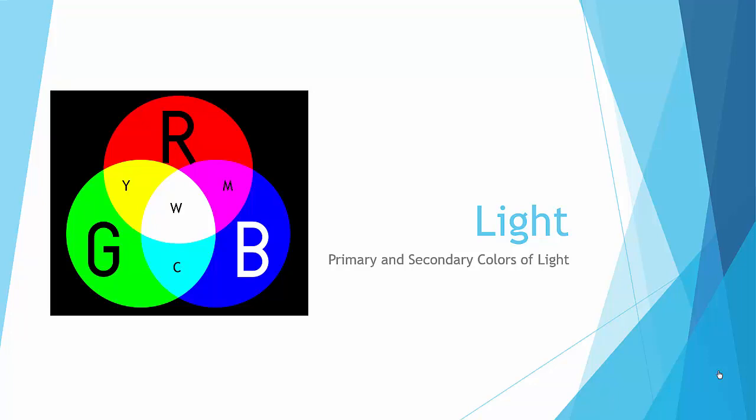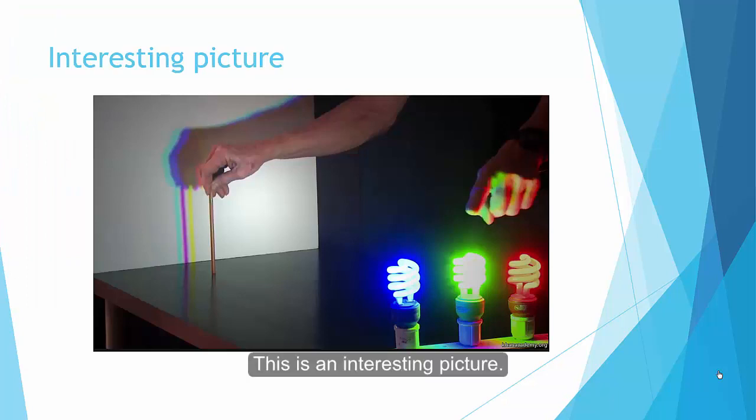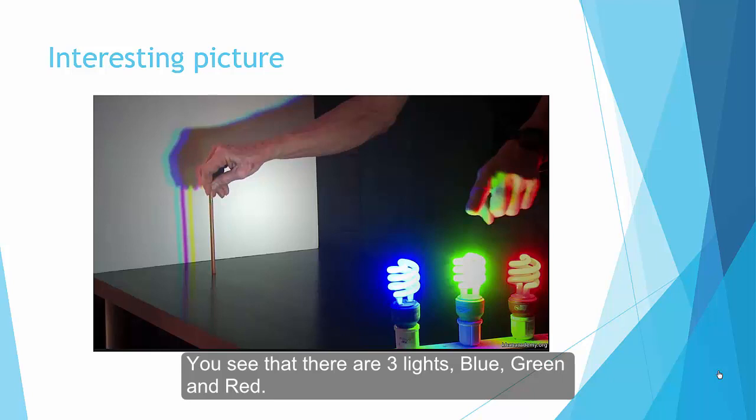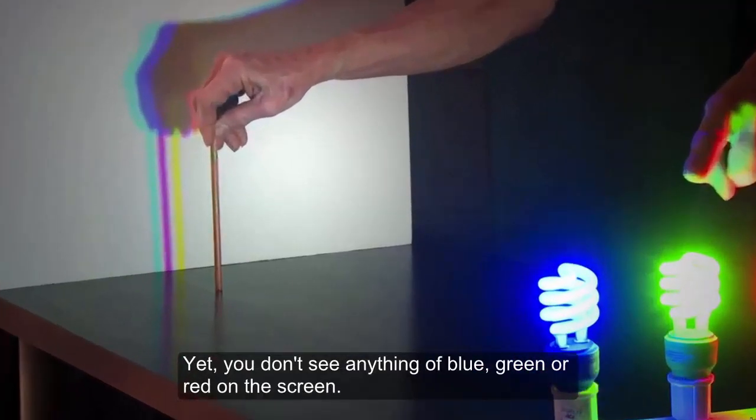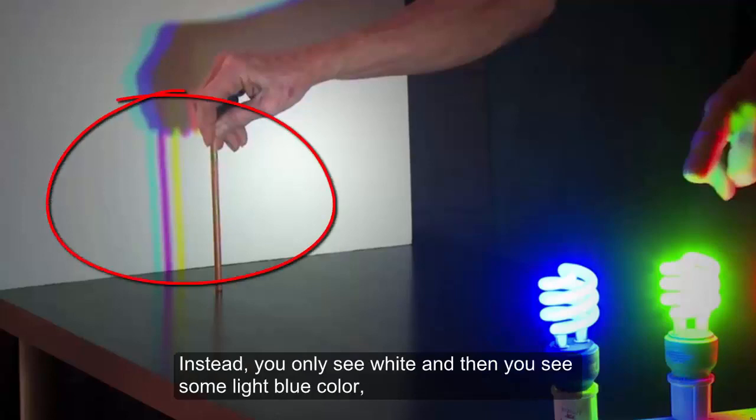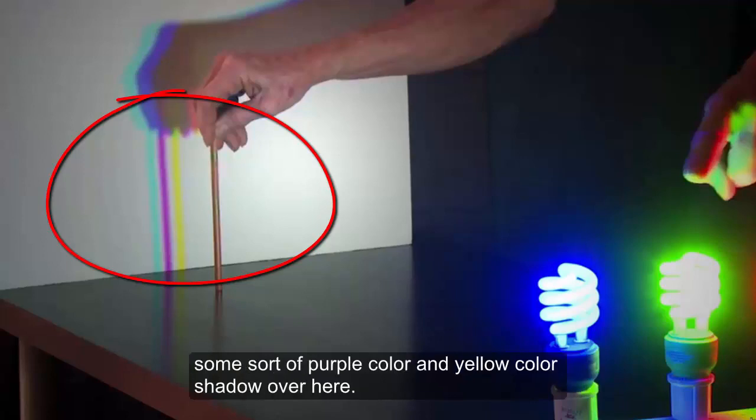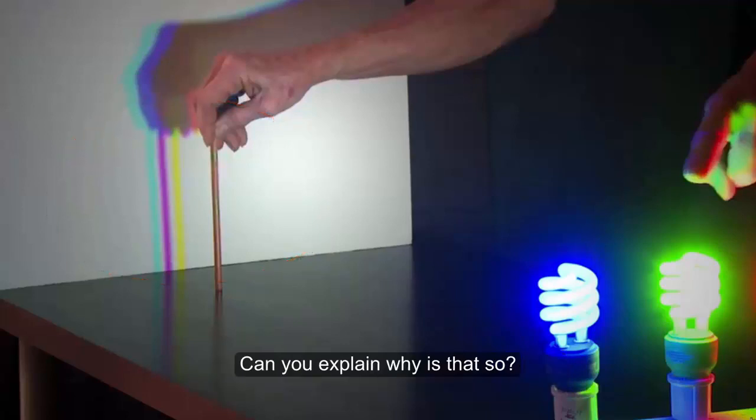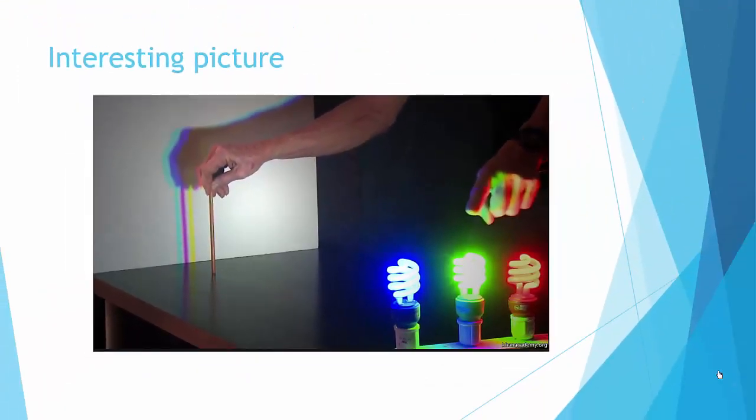In this lesson of light, we are going to explore the primary and secondary colors of light. This is an interesting picture. You see that there are three lights: blue, green, and red. But yet you don't see anything of blue, green, and red over here. Instead, you see white, and then you have some light blue color, some sort of purple color, and yellow color shadows over here. Can you explain why is that so? We are going to go into this topic.